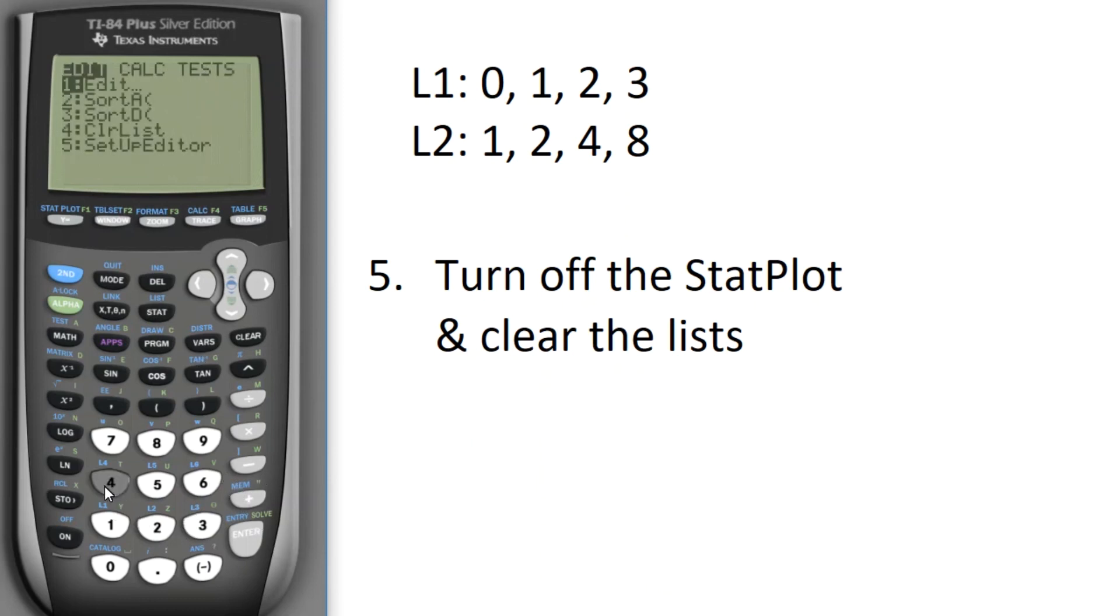So STAT. We're going to choose number 4. Second list. Let's clear everything out of list 1 and a comma. Second list again. Let's clear everything out of list 2. So we'll scroll down. Hit Enter. Done.